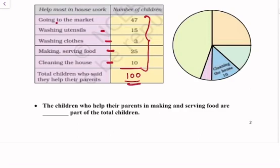The children who help their parents in making and serving food - the total number of children who help their parents are 25 and the total number of children are 100. So 25 upon 100, 1 upon 4. So the answer is 1/4 part of the total children.